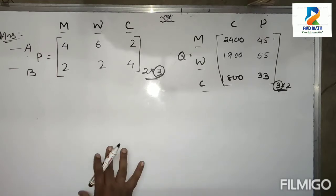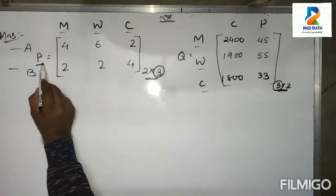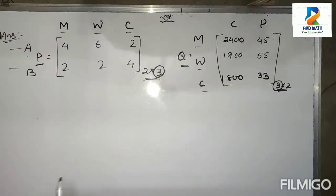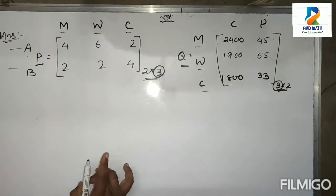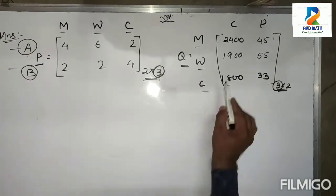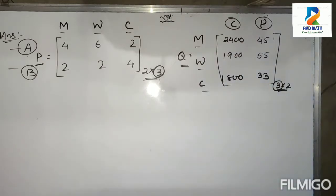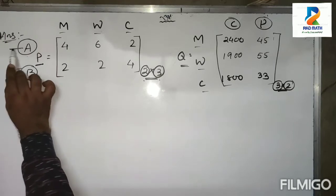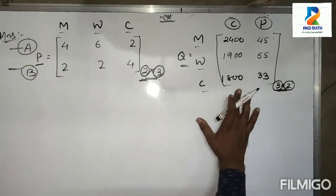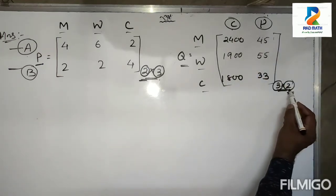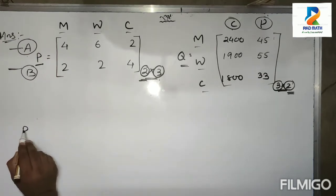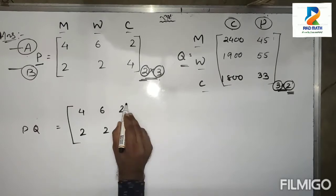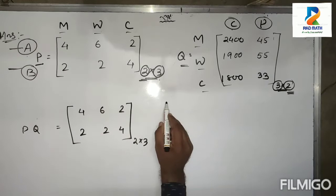The given information can be written in matrix form. P is the 2×3 matrix and Q is the 3×2 matrix. The total requirement of calories and proteins for families A and B is required. The answer will be 2×2 because the families are in row-wise in the first matrix — that's why it is two — and calories and proteins are in column-wise in the second matrix — that's why it is two. If we multiply these two matrices, P×Q equals the matrix [4, 6, 2; 2, 2, 4] multiplied with [2400, 45; 1900, 55; 1800, 33].